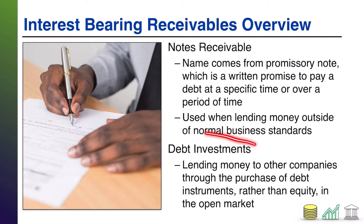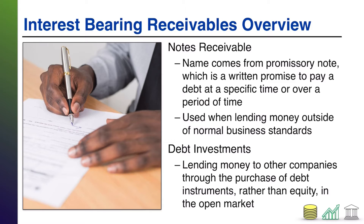Notice I also have on here debt investments. Debt investments typically involve the bonds of companies. So to the extent that you purchase the debt instruments of other companies, rather than their stock — you're buying their bonds — that is typically going to create a receivable on your books for interest that racks up as part of making that debt investment in other companies. So, two ways that you could essentially accrue receivable interest as a result of doing business.